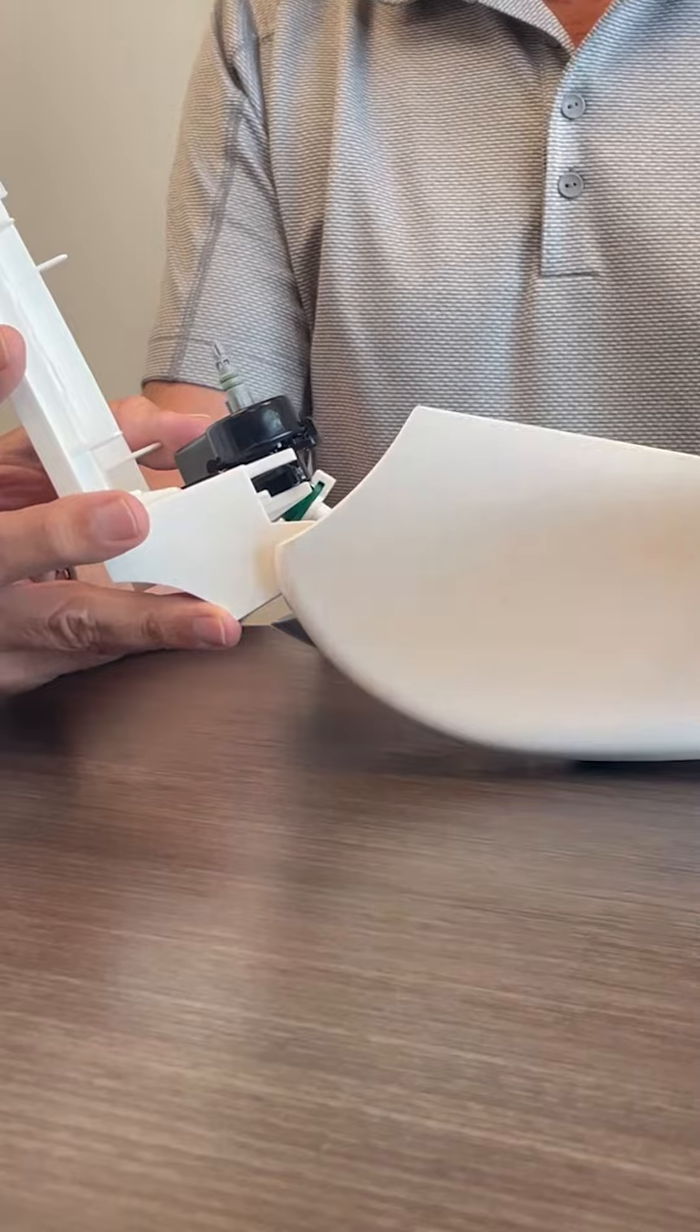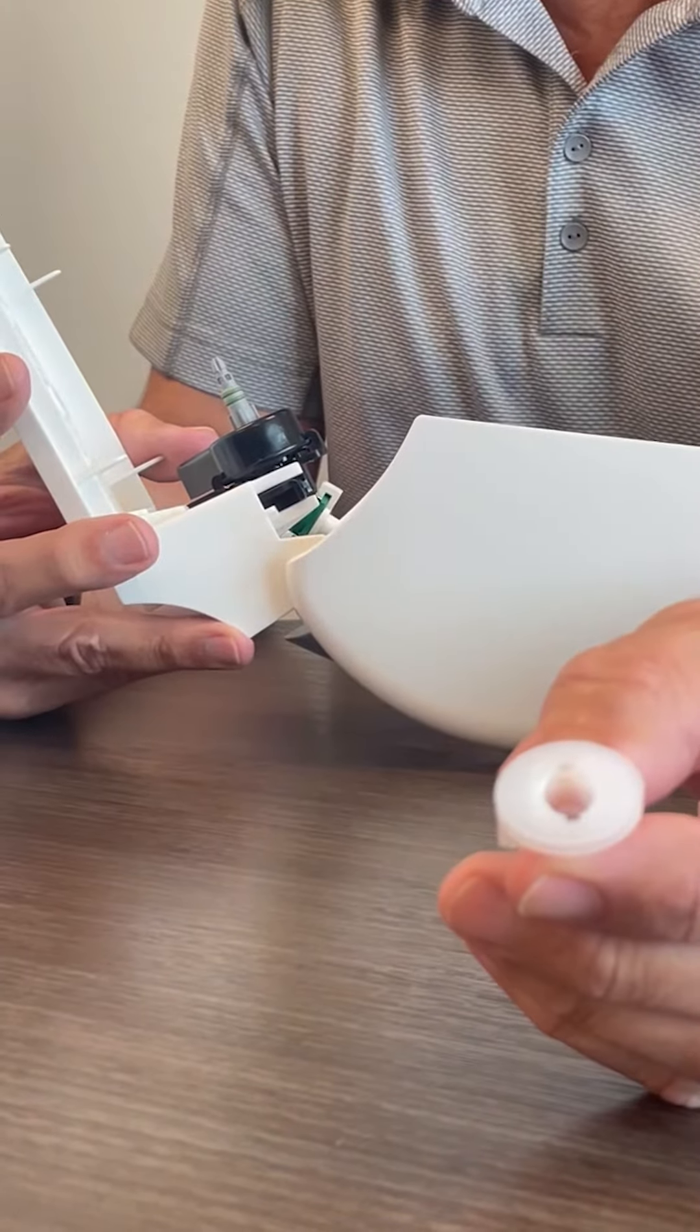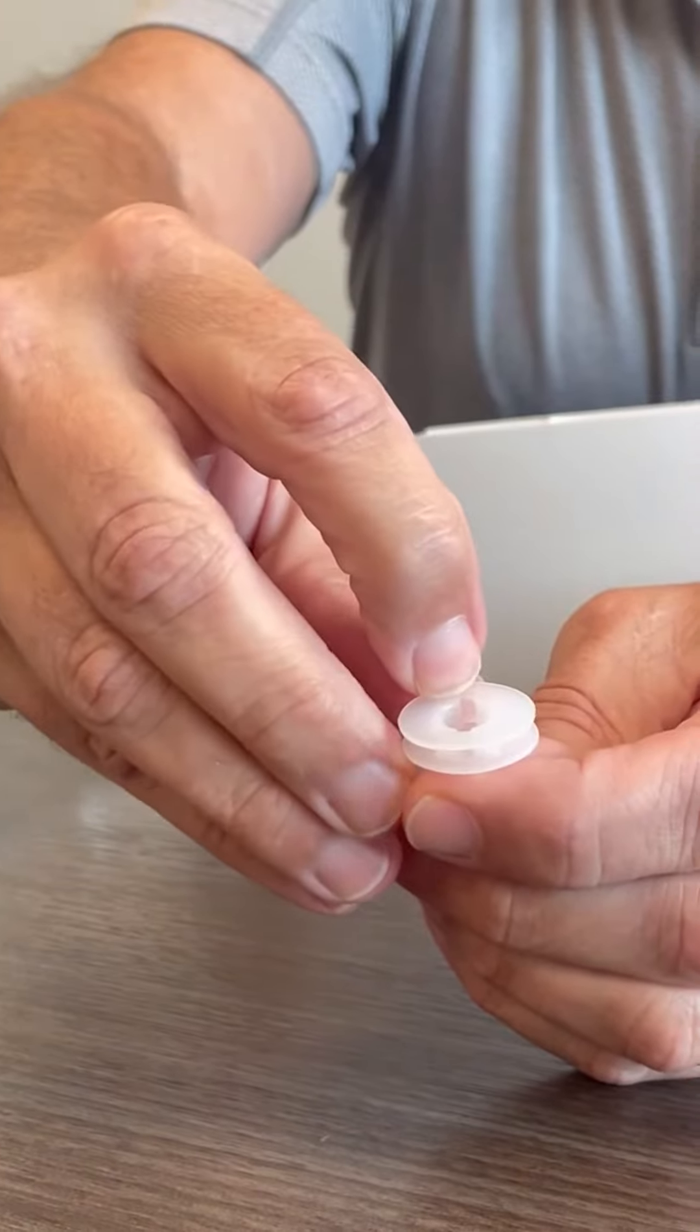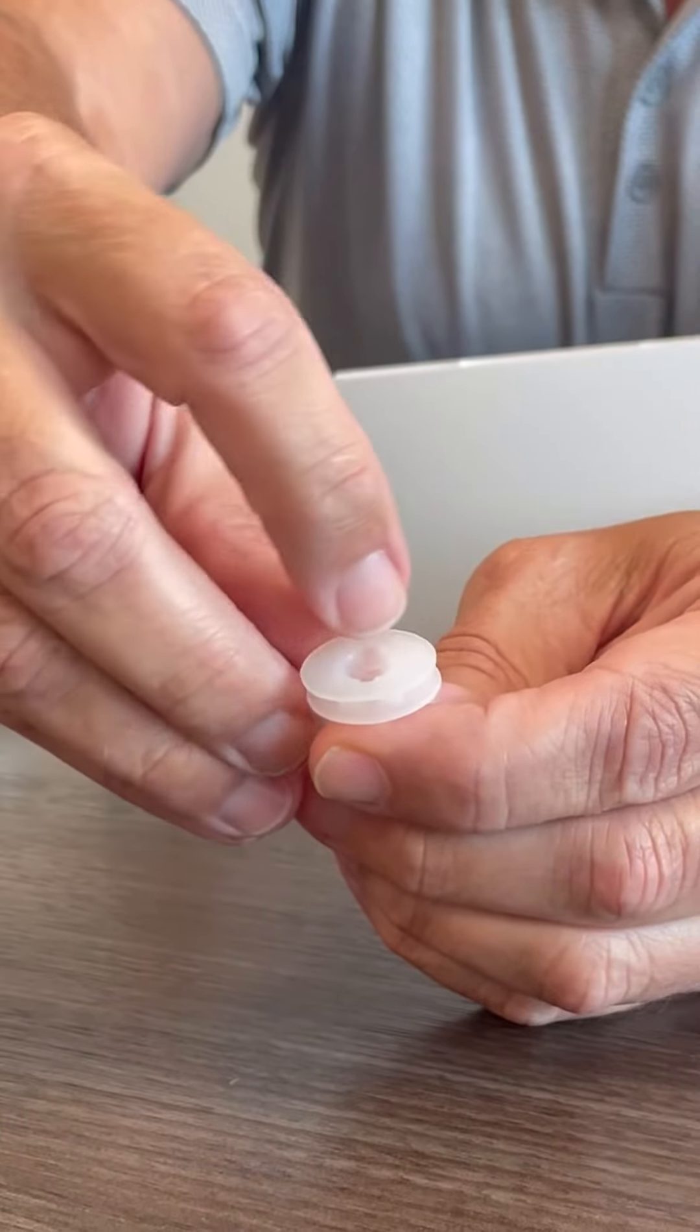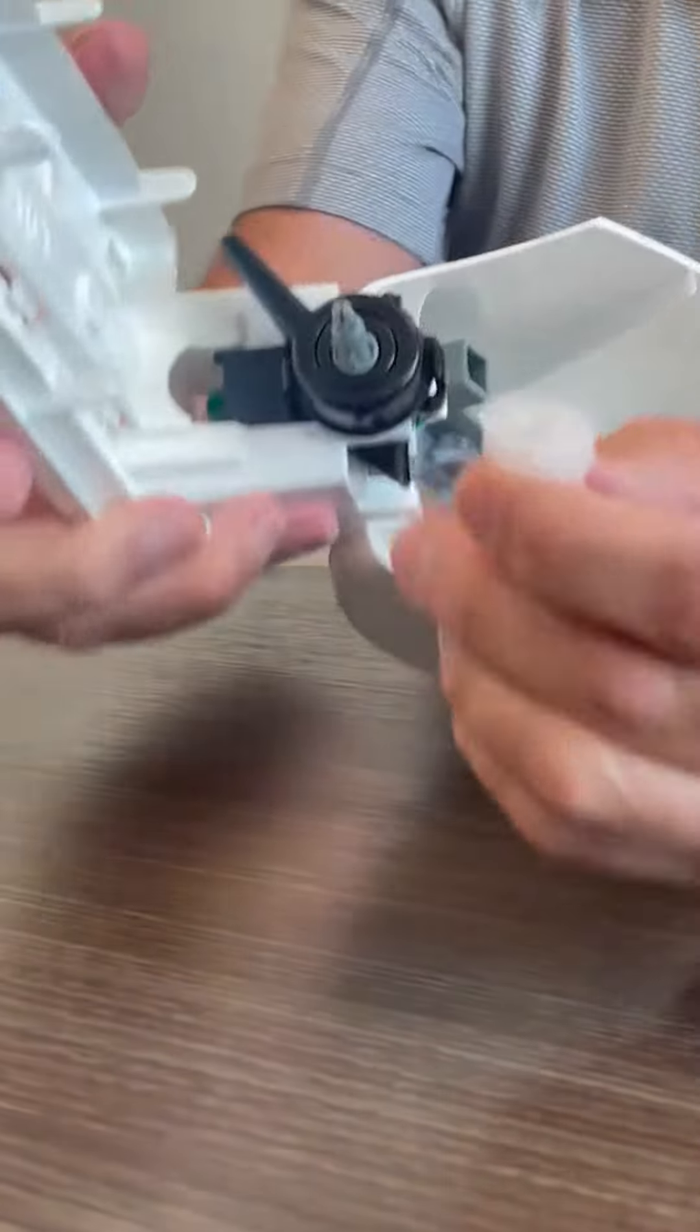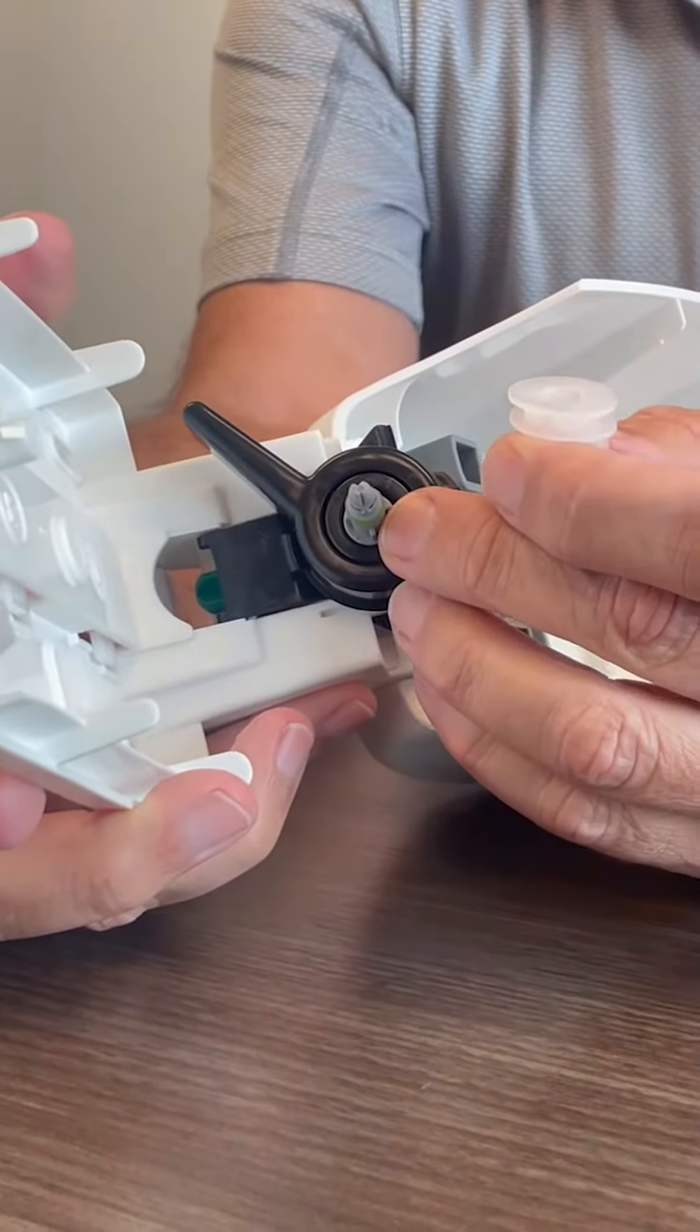The manufacturer previously made a piece that looked like this except it had four notches on it. One at the top, bottom, left, and right. The new ones are only available with two notches on it that need to fit the stem on the dispenser.